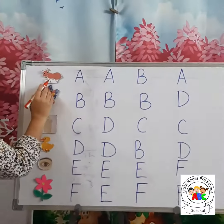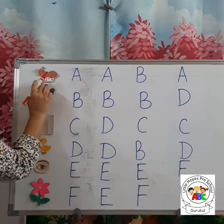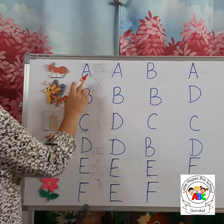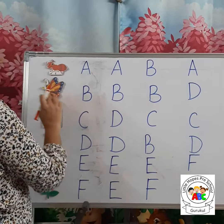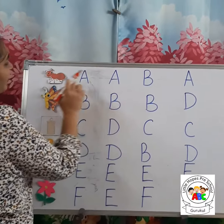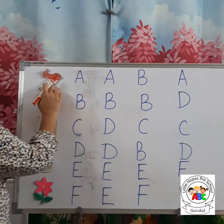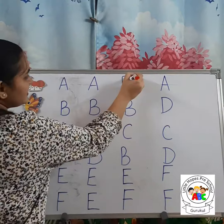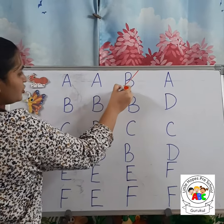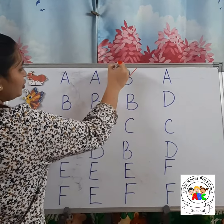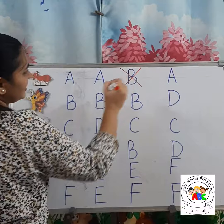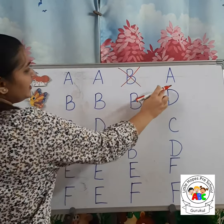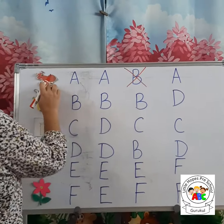This is the picture of Ant. A for Ant. And this is not A — this is letter B. So we are going to cross out this letter. This is A for Ant.